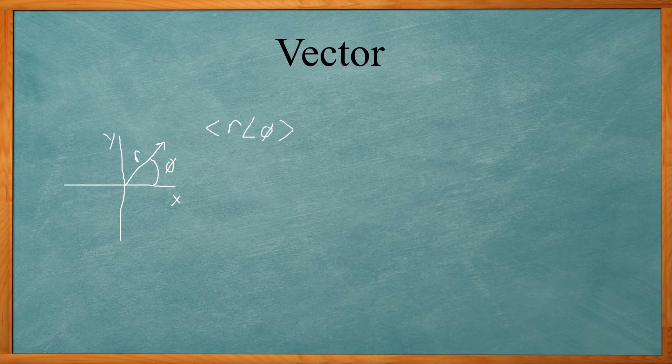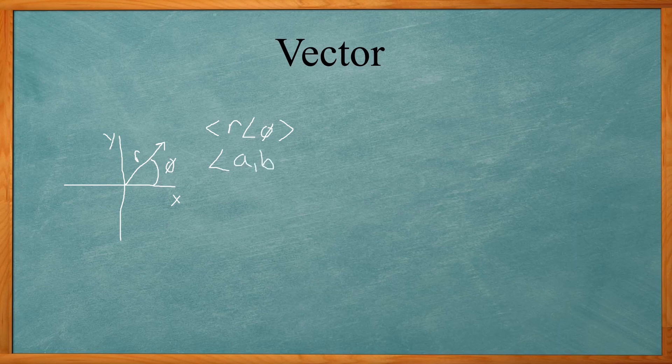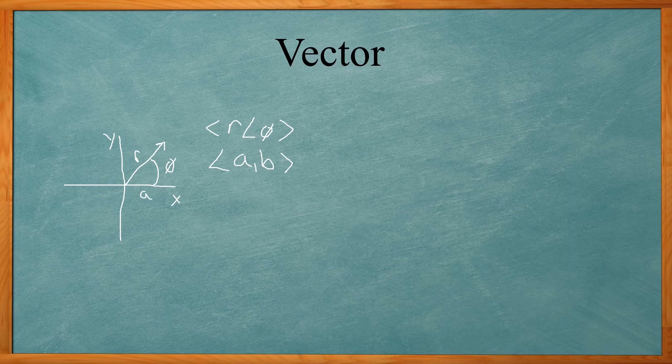Now this can be considered polar coordinates. You can also write a vector in component form or rectangular coordinates. It could be A comma B, where A is your change in the x direction and B is your change in the y direction.